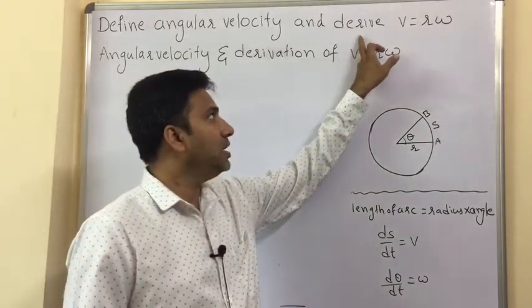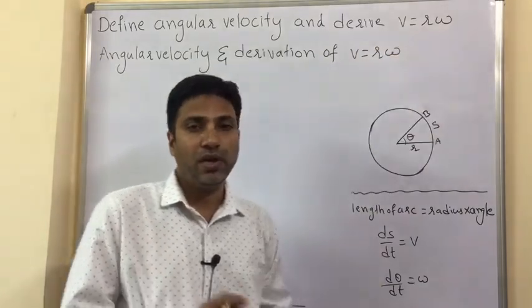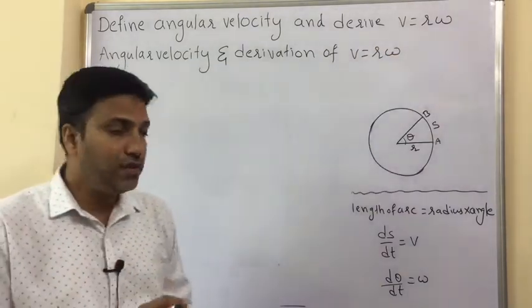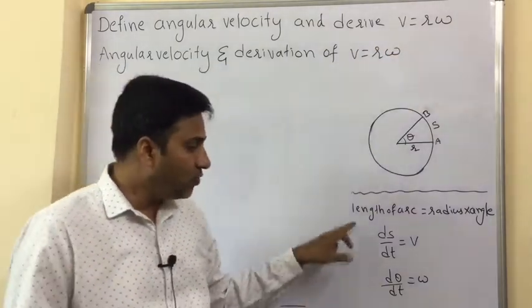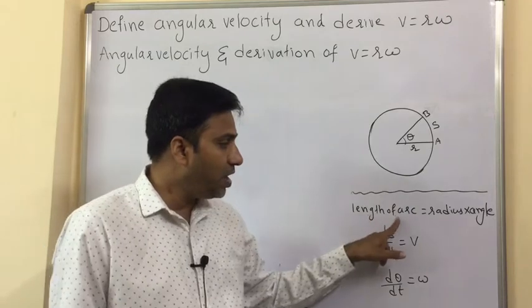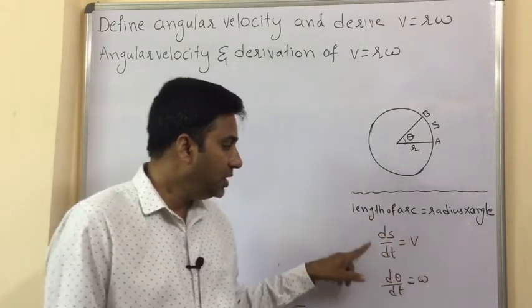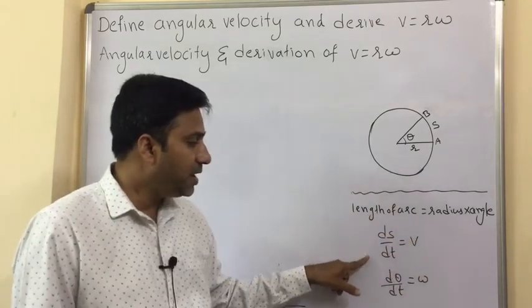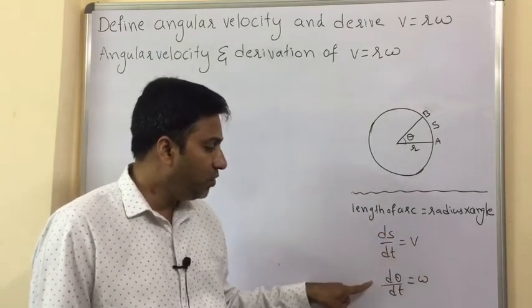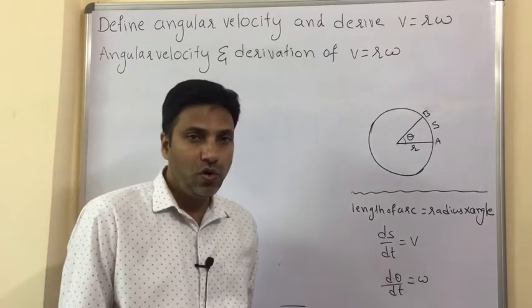To derive v equals r-omega, we should know the following formulas: length of arc equals radius into angle; ds by dt equals v; and d-theta by dt equals omega.